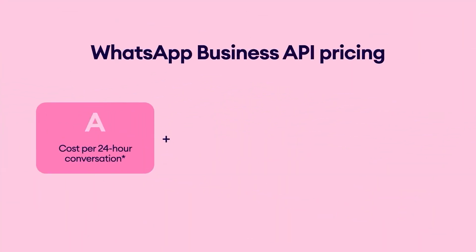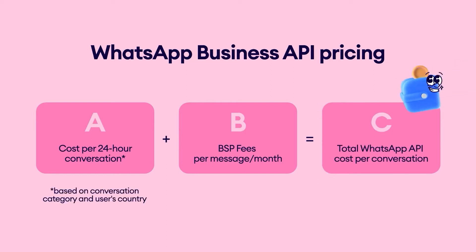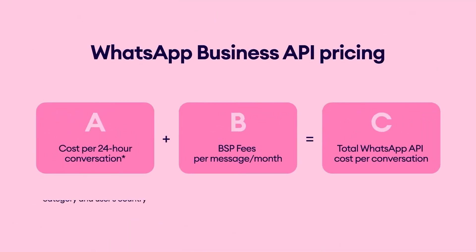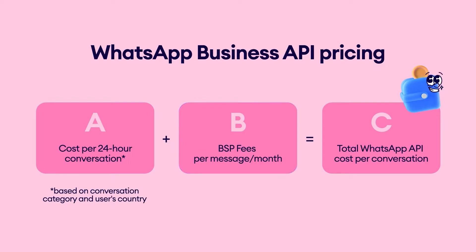How does the WhatsApp API pricing model work? Businesses are charged based on how many conversations they have with their customers, but the costs also depend on what kind of conversation it is and where the customer is from. Other fees might be tied to using WhatsApp Business API besides WhatsApp conversation costs. For example, you need to consider fees from the WhatsApp Business Service Provider, or BSP, that you'll likely use. The BSP acts as the intermediary since WhatsApp Business API doesn't have an interface, and these fees can vary depending on things like hosting and pricing plans.